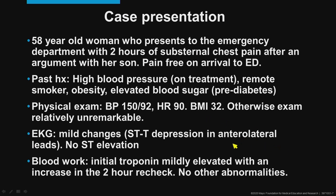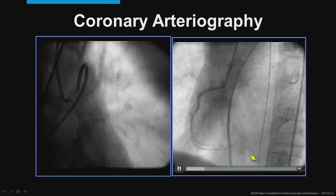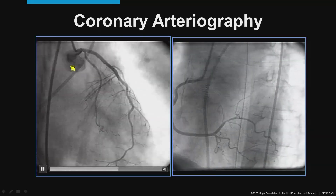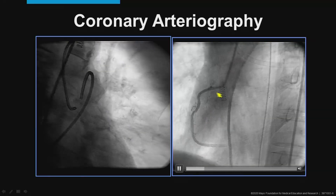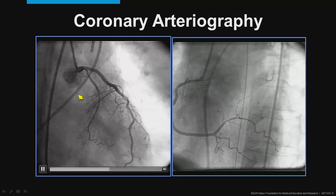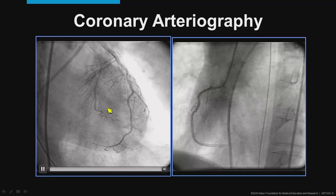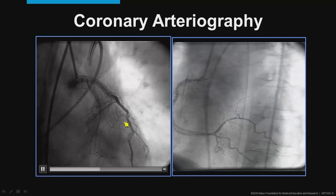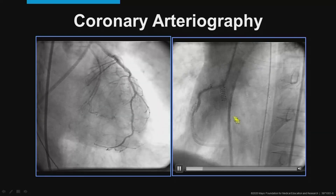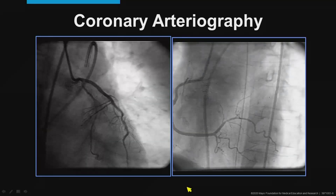Her EKG shows STT changes in the anterior lateral leads but no ST elevation. Her troponin is elevated and goes up at the two-hour recheck. The rest of her laboratory data is unremarkable. She goes to coronary angiography — here's the left system, here's the right system — and we don't see anything. There's no obstructive lesion. The arteries have good flow. Everything looks fine.